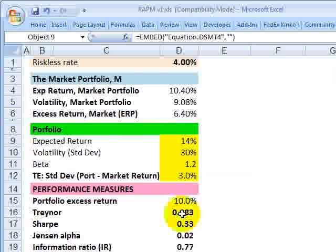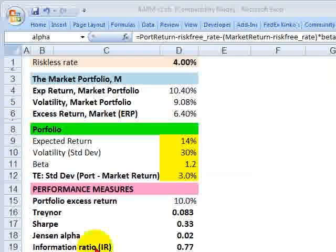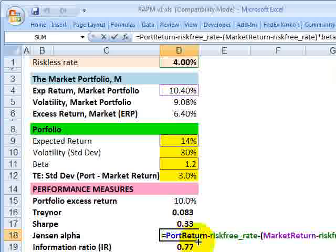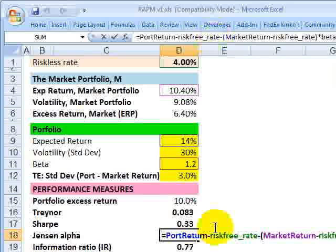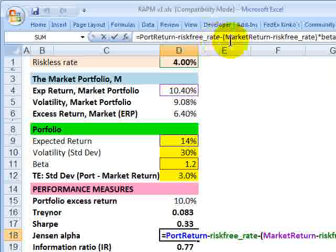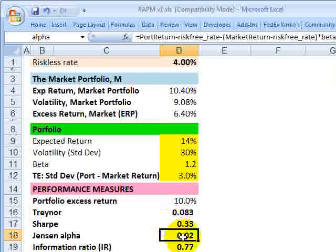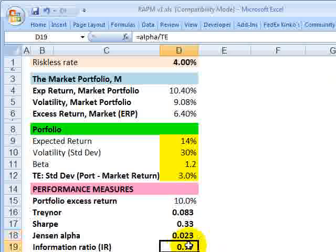So if I move that out, and then if we just look at this formula, it's portfolio return minus the risk-free rate. So that's the portfolio's excess return. And then we're subtracting the equity risk premium multiplied by the beta. And so in this case for the Jensen's alpha, we get 2.3%, indicating our portfolio is outperforming its expected return according to the capital asset pricing model by 2.3%, which is quite significant.